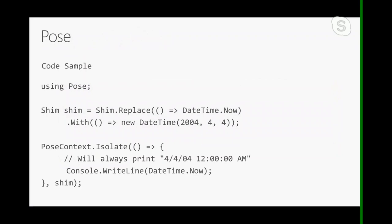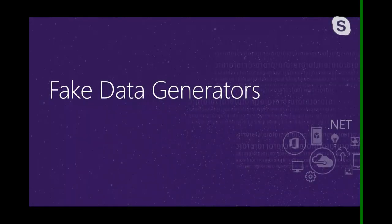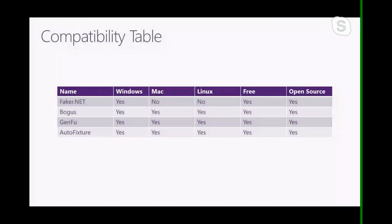The next category is fake data generators, and I'd say these are actually one of the most important parts of unit testing. A lot of times you want an adequately randomized dataset that allows you to test multiple different cases, as opposed to manually providing data — because you might not cover all edge cases. Fake data generators help with that. Here we have four of them, and most are cross-platform, free, and open source.